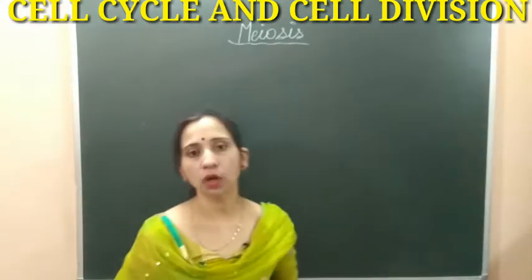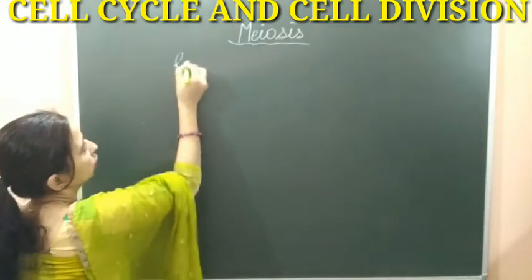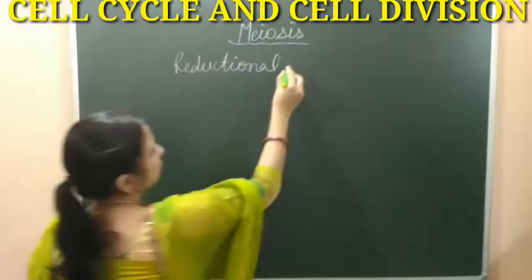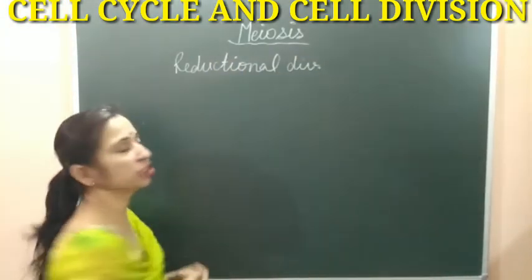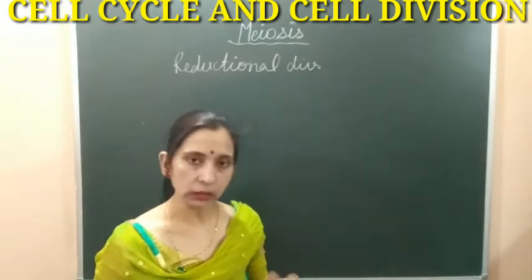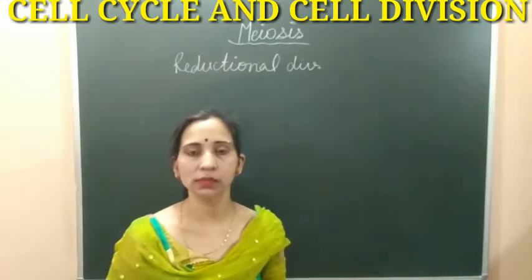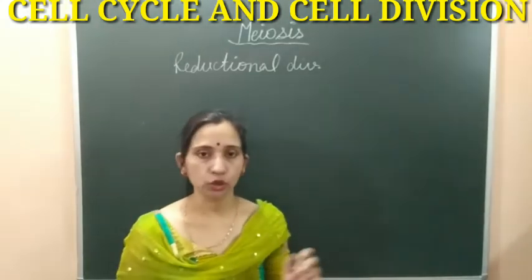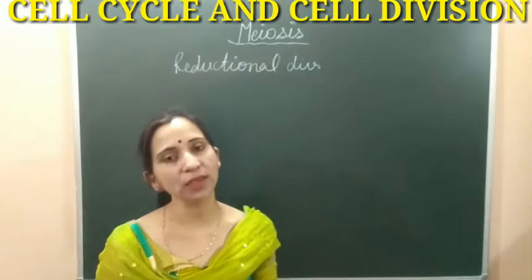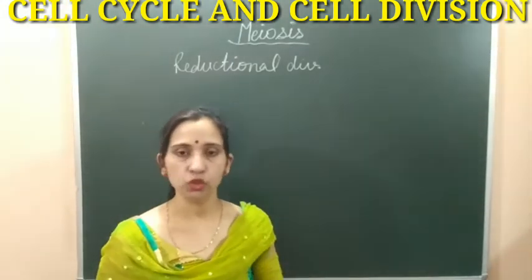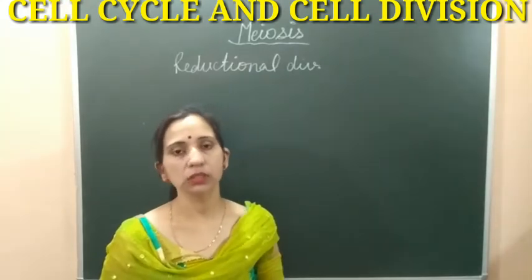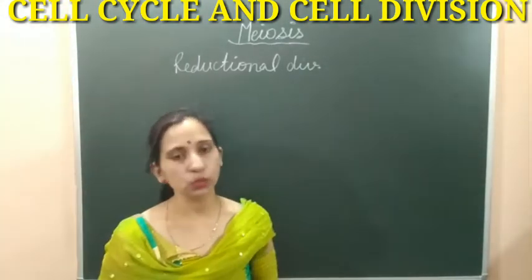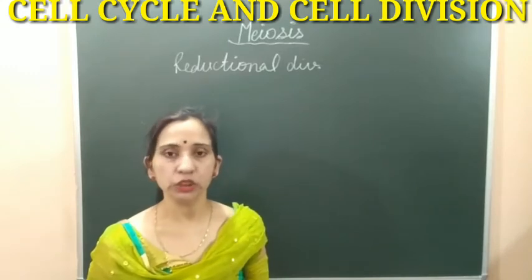Meiosis is also known as reductional division. Why do we call it reductional division? It is because in this type of division, the cells which are formed from the parent cells get half the number of chromosomes. In mitosis, the daughter cells have the same number of chromosomes as the parent cell, that's why it was known as equational division. But in meiosis, the daughter cells get half the number of chromosomes, that's why this division is known as reductional division.